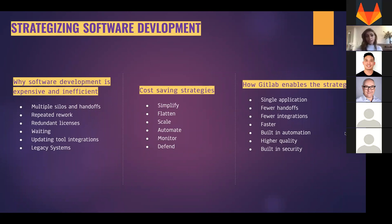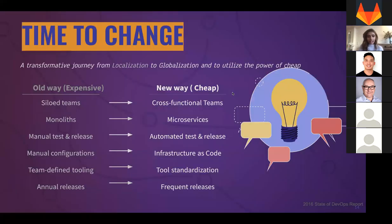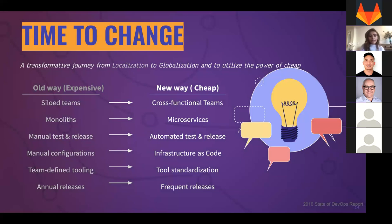Let me go deeper into how GitLab enables this across different phases - moving from the old expensive way to the cheap way. This means: silo teams to cross-functional teams, monoliths to microservices, manual testing and release to automated test and release, manual configuration to infrastructure as code, team-defined tooling to tool standardization, and annual releases to frequent releases. From a broader strategy perspective, these are the things that make digital transformation through DevOps cheaper.